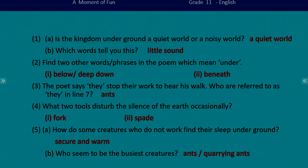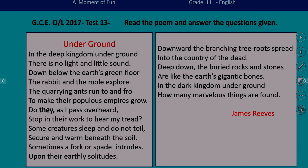The third one: the poet says 'they stopped their work to hear his tread' — who are referred to as 'they' in line seven? Let's move on to the poem. See the seventh line: 'do they as I pass over?' Now go back to the previous line: 'quarrying ants run to and fro to make their populous empires grow.' So who run to and fro? They refer to the quarrying ants.